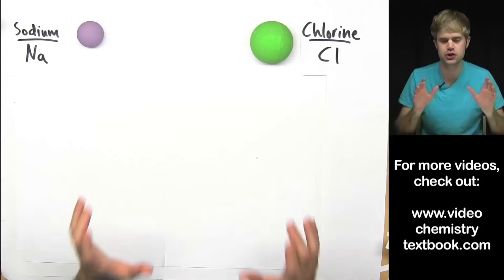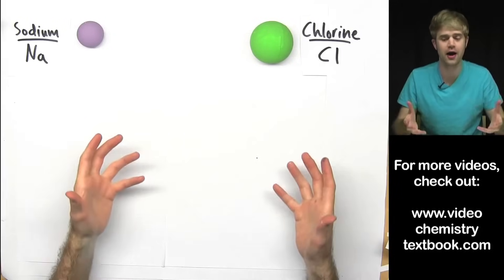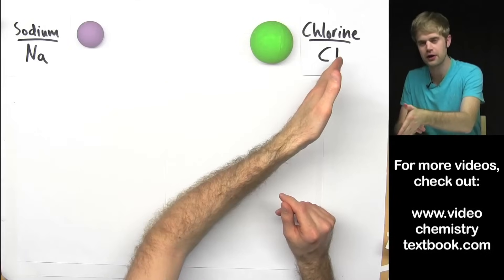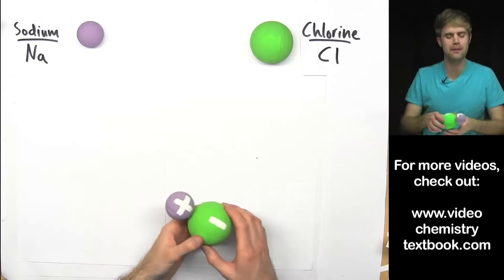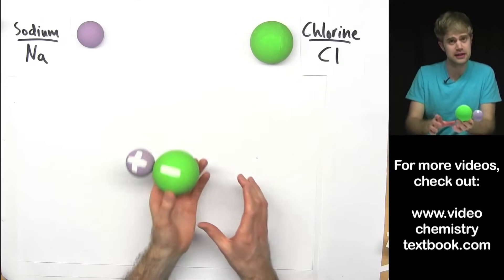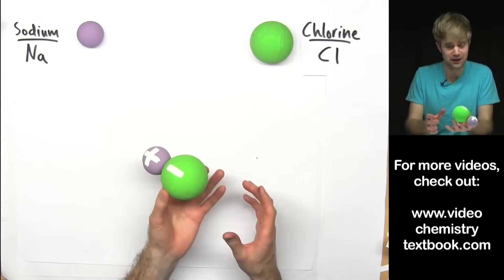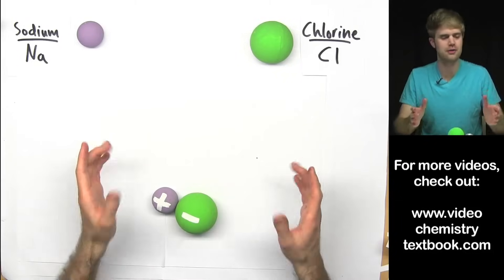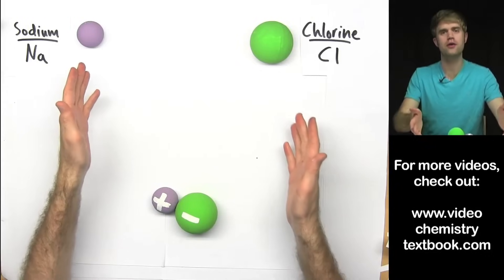Now I want to talk a little bit about the shape and structure that ionic compounds make. So we've got sodium here, we've got chlorine here and we've talked about how they get opposite charges and they end up sticking together forming a shape kind of like this. But so far, we've only talked about two atoms, one of each.